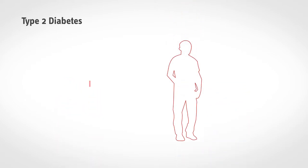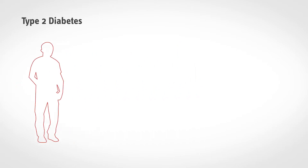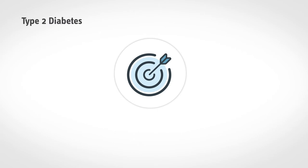If an increased risk or initial changes in metabolism are detected, those affected can prevent or at least delay the disease by changing their lifestyle. The important things here are a healthy diet, lots of exercise, and not smoking.